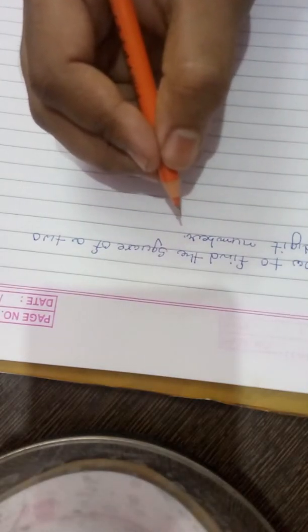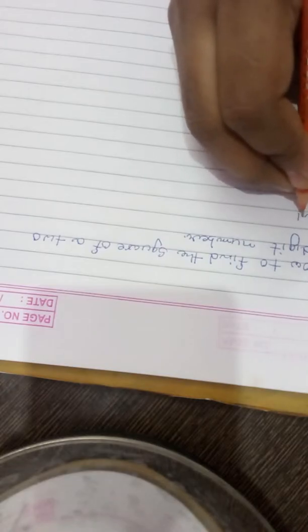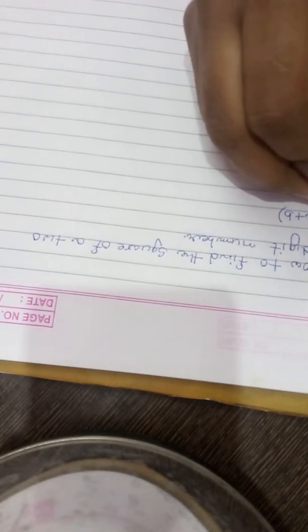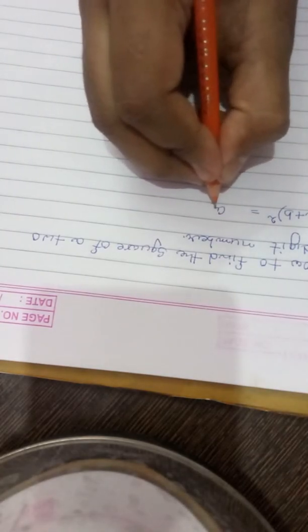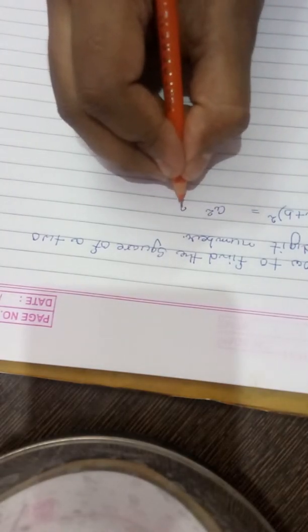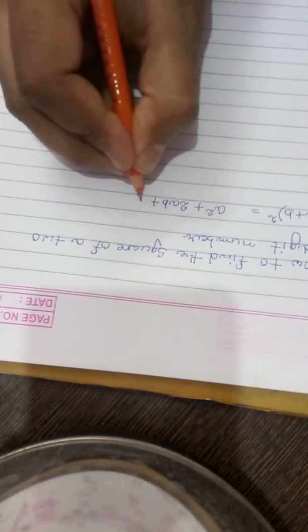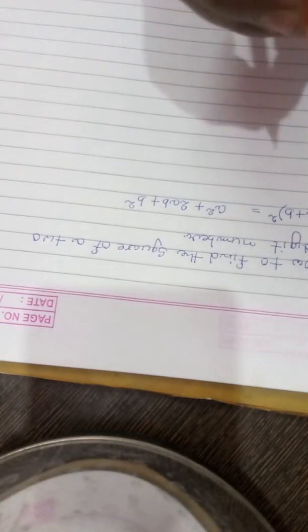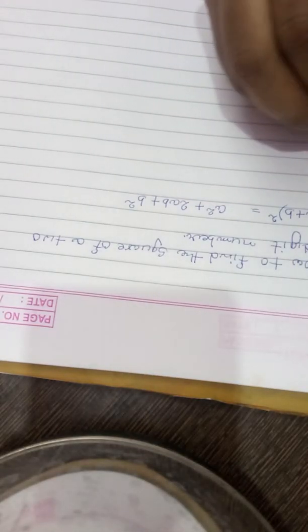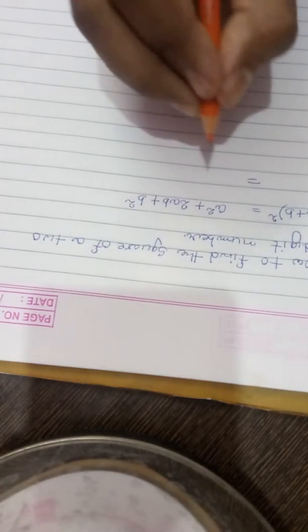In primary class, you must have come across the a plus b whole square formula. So a plus b whole square formula is a² + 2ab + b². Right, so here we can write a² + 2ab + b² separately.